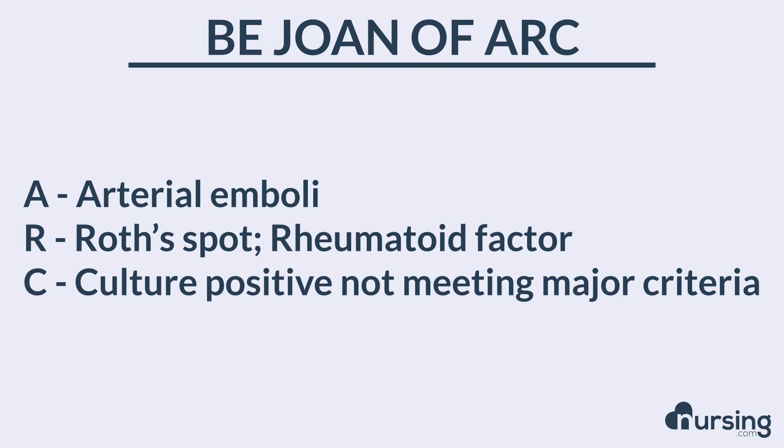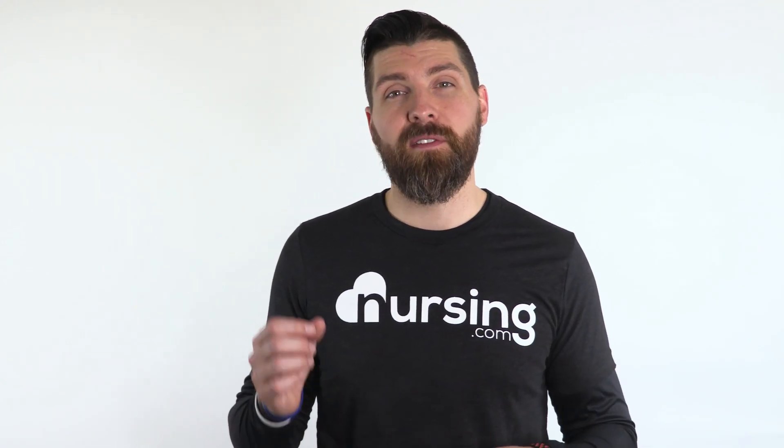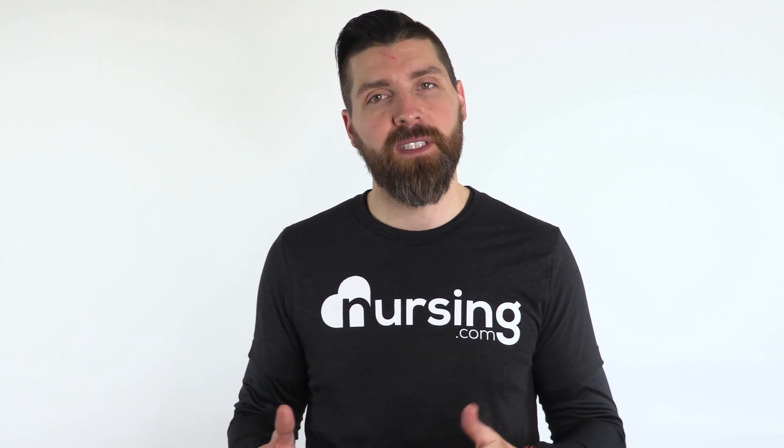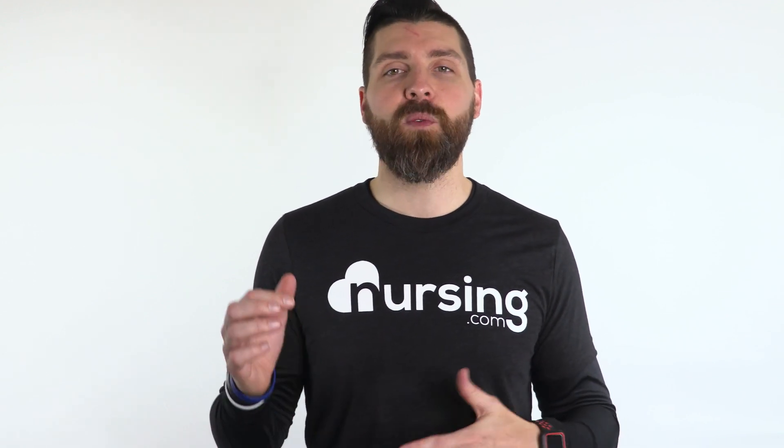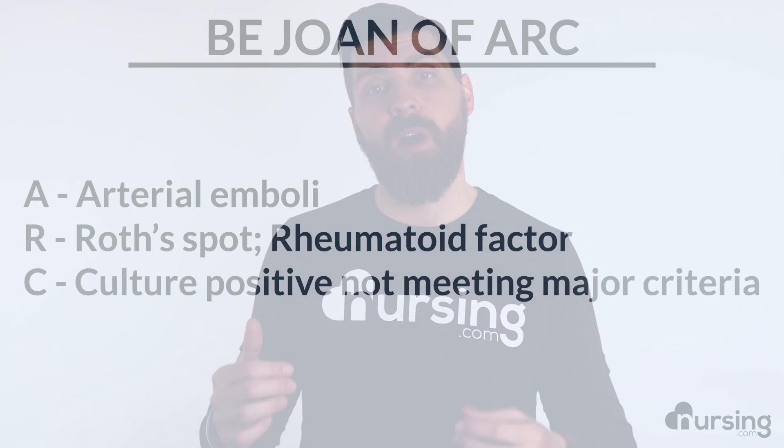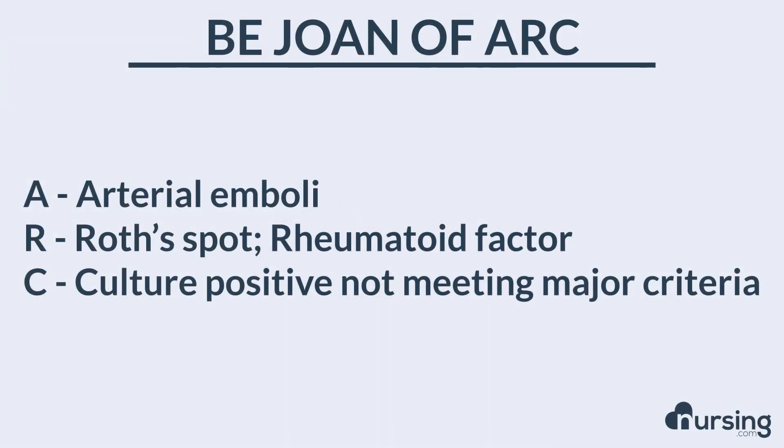R stands for Roth spots — these are very specific red spots that have white or pale centers, and interestingly they're actually seen by an ophthalmologist on an exam.